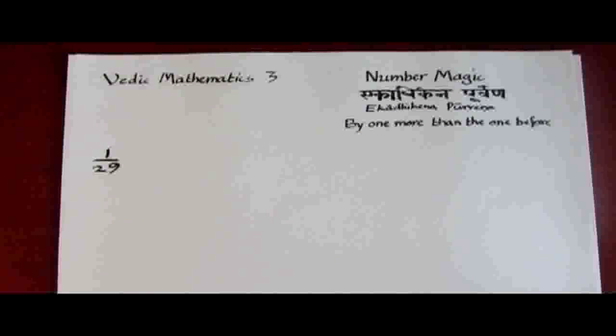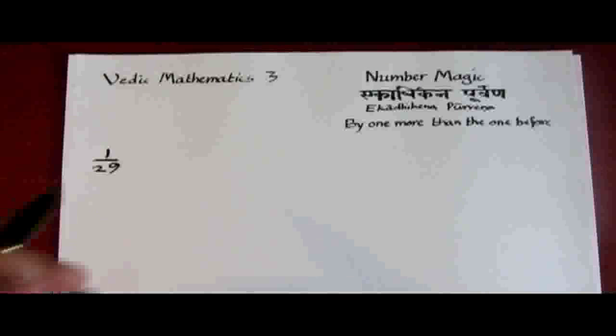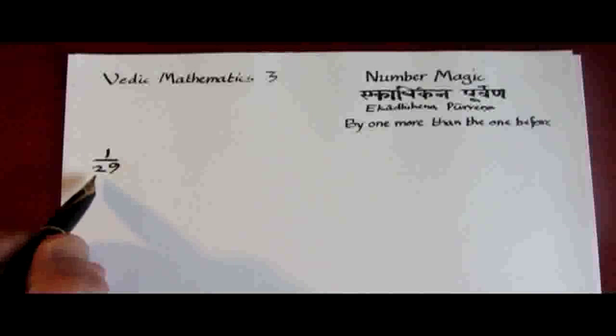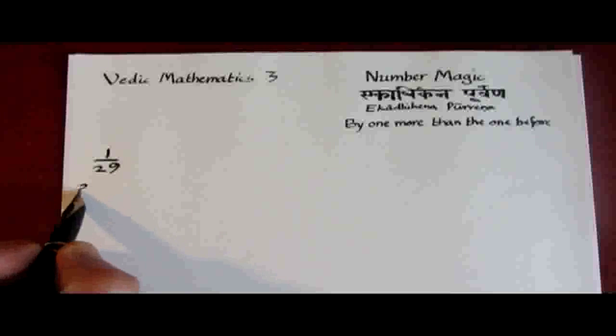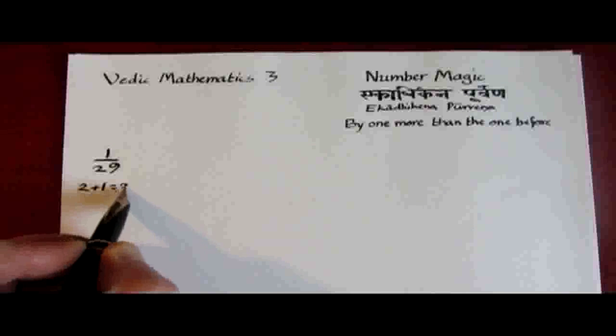In this session I'm going to show how to find the decimal equivalent of 1 over 29 using the by one more than the one before rule, which in Sanskrit is ekadhikena purwena. The rule tells us to take the digit before the 9, which is 2, and add 1, making 3, and that becomes our divisor.